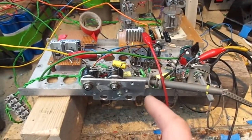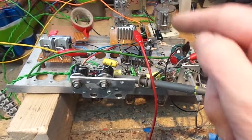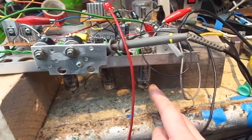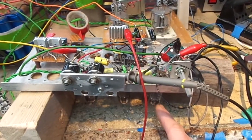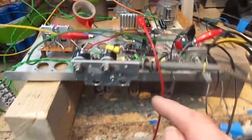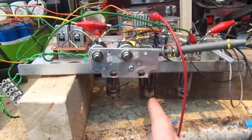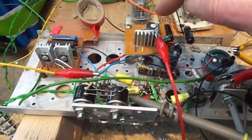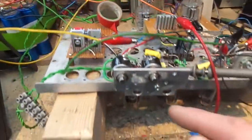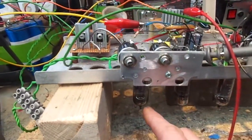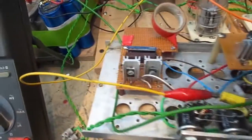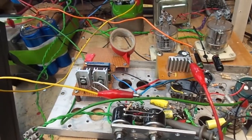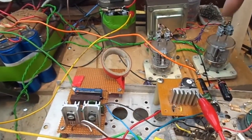Moving on, this is my driver stage, this is my voltage amplifier. So what we've got, we've got a 6CG7 voltage amplifier. We've got a 12BH7 phase splitter driven from a constant current source there. And then we've got another 12BH7 driven from a dual constant current source.